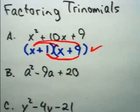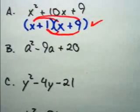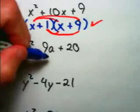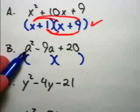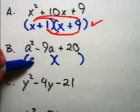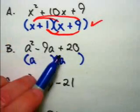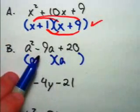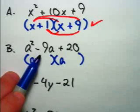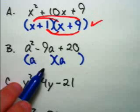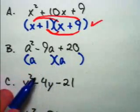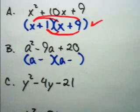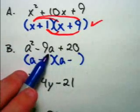Let's take a look at problem B. Once again let's do the easy part first. a times a would give us a squared. We need two numbers that multiply to give us a positive 20 and add to give us a negative 9. They have to both be positive or both be negative. But they can't be one of each because a positive times a negative will not give us a positive 20. So I'm thinking negative and negative. 4 times 5 is 20. 4 plus 5 is 9.